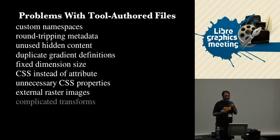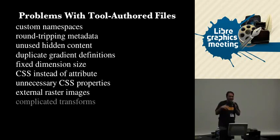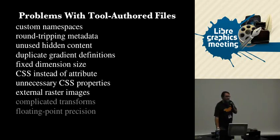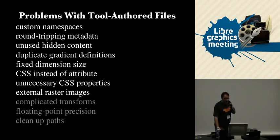Some of the upcoming features include: simplified complicated transforms — multiple nested transforms are very difficult to work with when combining different pieces of content or using content in different ways. Also, improved floating point precision — Inkscape and Illustrator both go out to about six or seven decimal places of precision when they really only need about two, and when you're talking about large numbers of numbers, that means significant file sizes. It will also eventually clean up some of the path definitions.